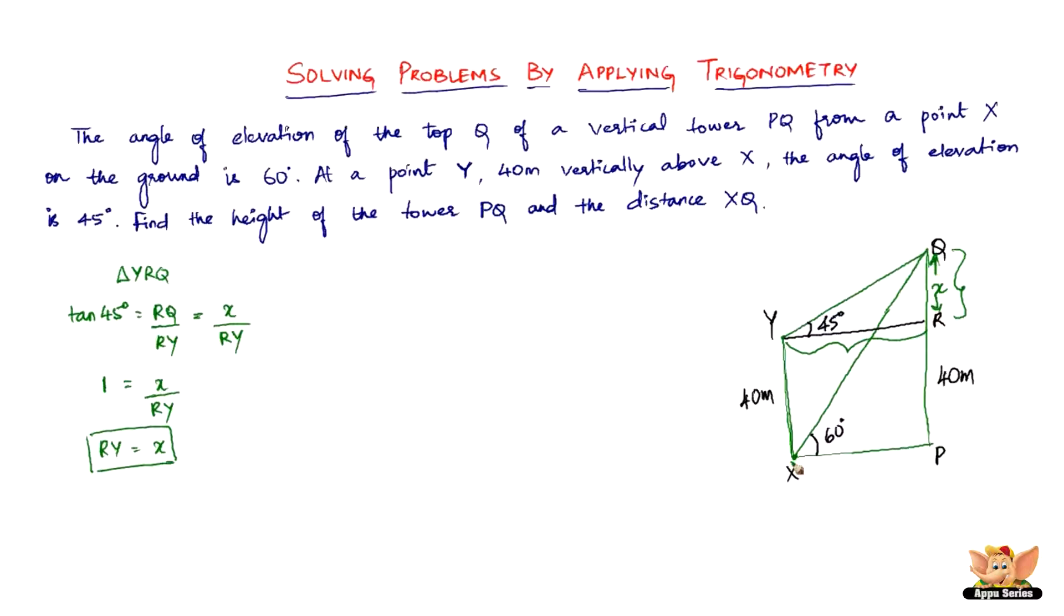So if RY is equal to X, then XP is also equal to X. Now next, let's take the triangle XQP. In triangle XPQ, we have tan 60. Tan 60 degrees equals PQ over XP. So tan 60 is root 3, and PQ is 40 plus X, and we have XP as X. So here we are, now we can find X here. So we've got X root 3 equals 40 plus X, or X root 3 minus X equals 40.